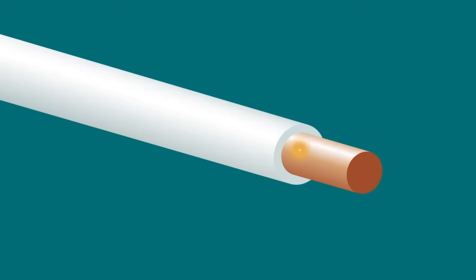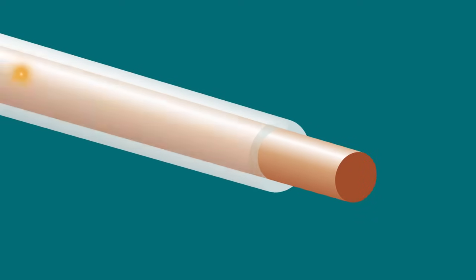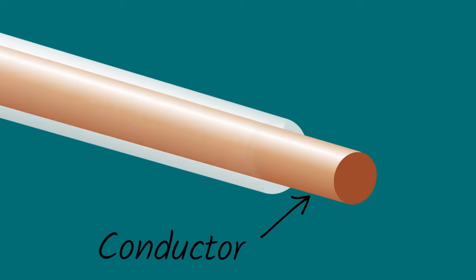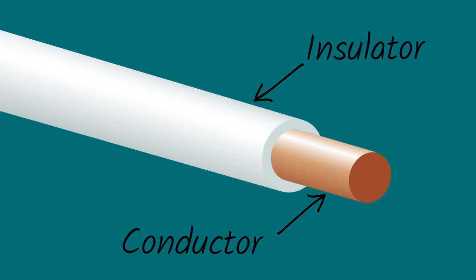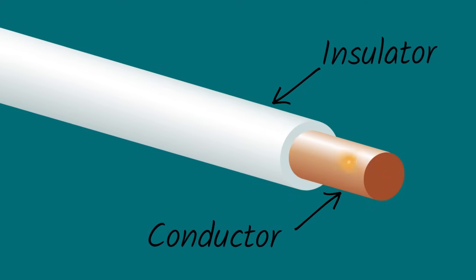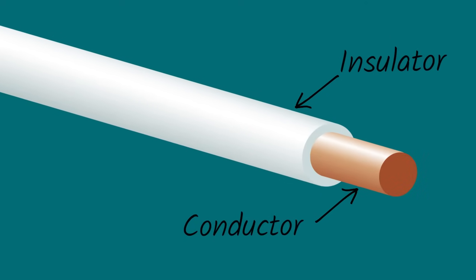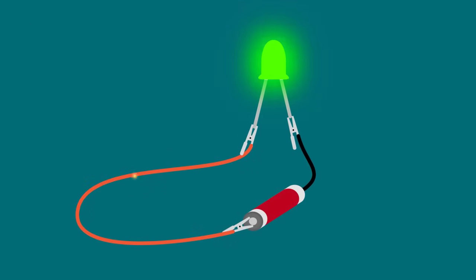Have you ever seen the inside of a wire? The inside is usually made up of copper, or another conductive metal, while the outside is made of plastic, an insulator. The copper wire helps the electrons flow, while the plastic insulator helps keep the electricity from being wasted and prevents us from being shocked.